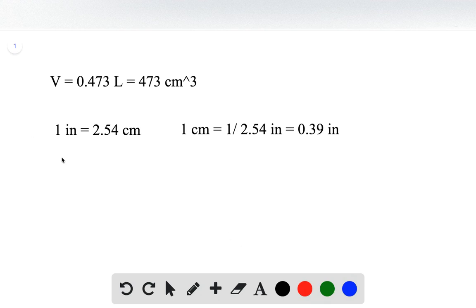So let me retype it. One cubic centimeter equals to 0.39 cubed inch. And that is roughly equal to 0.059 cubic inch.